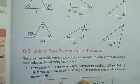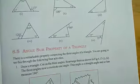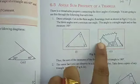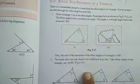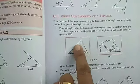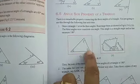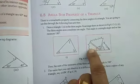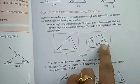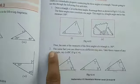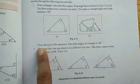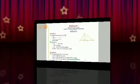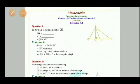Now we have the angle sum property of a triangle. The angle sum property states that the sum of all three angles of a triangle equals 180°, that is angle 1 + angle 2 + angle 3 = 180°. In an activity, if we cut out all three angles and place them in a line, they form a straight line, confirming their sum is 180°.